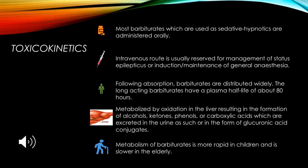Once absorbed, barbiturates are metabolized by the liver, resulting in the formation of alcohols, ketones, phenols, and carboxylic acids. They are excreted through the urine in the form of glucuronic acid conjugates. This metabolism is very rapid in children and slow in elderly patients.